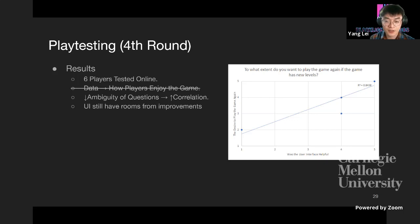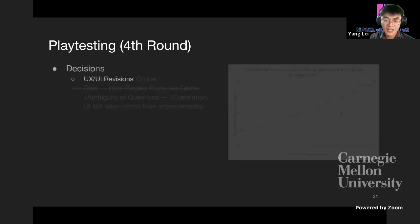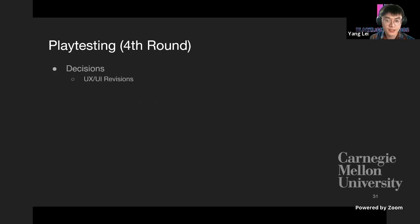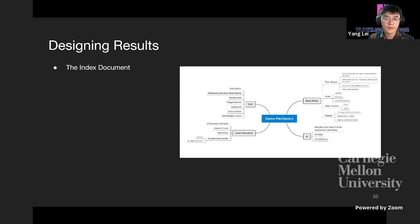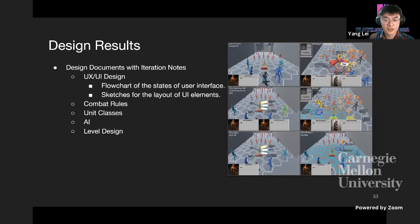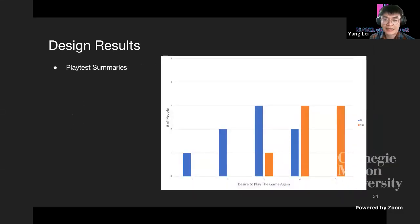Results still showed room for more UI improvements, so they remained focused on UX/UI design for the remainder of the semester, including camera movement, camera snapping, and determining where and when interface elements should be presented to players. The design deliverables include an index document for the next team to understand the structure of their design documentation, design documents covering all aspects of the game including UX/UI design, combat rules, unique classes, AI, and level design — all in archive with iteration notes — and detailed playtest summaries for future teams.